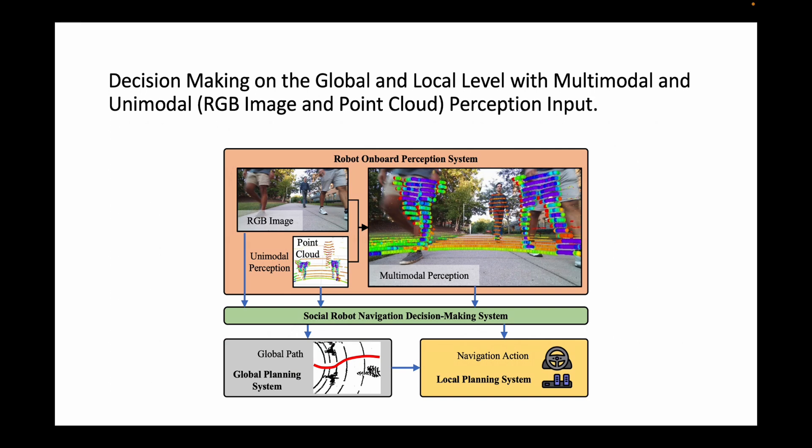We collect two fundamentally different perception data — RGB image and point cloud — from the robot's perception sensor. These two inputs are then combined to get multimodal perception input. These three data are then passed through a decision-making system which further predicts a global path in the form of waypoints and navigation actions that are linear and angular velocity.